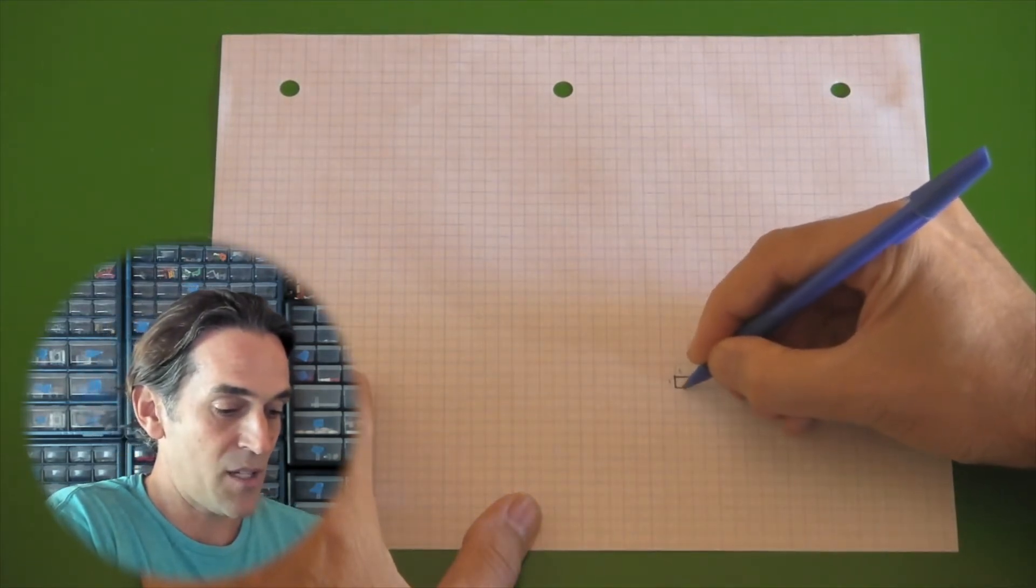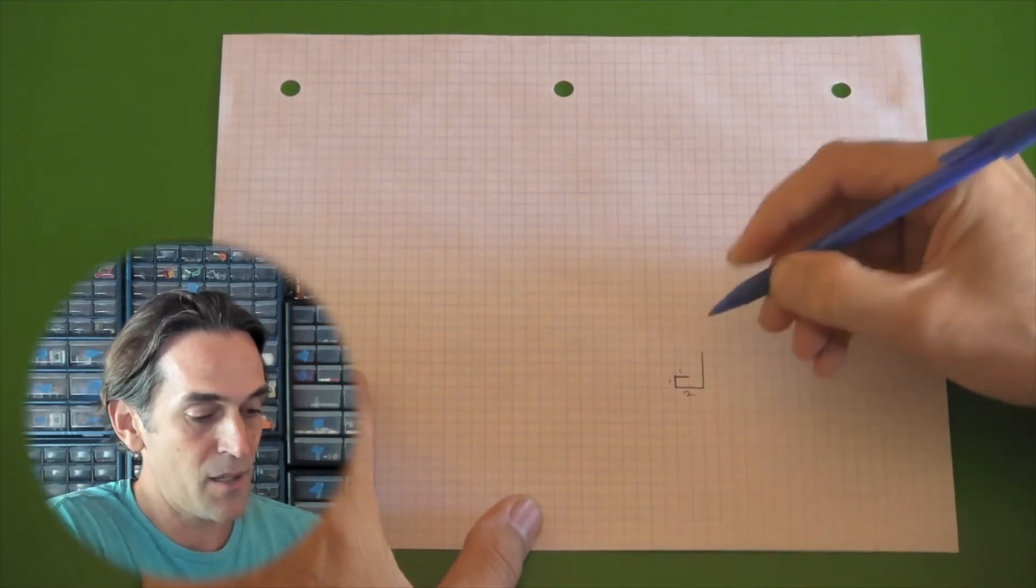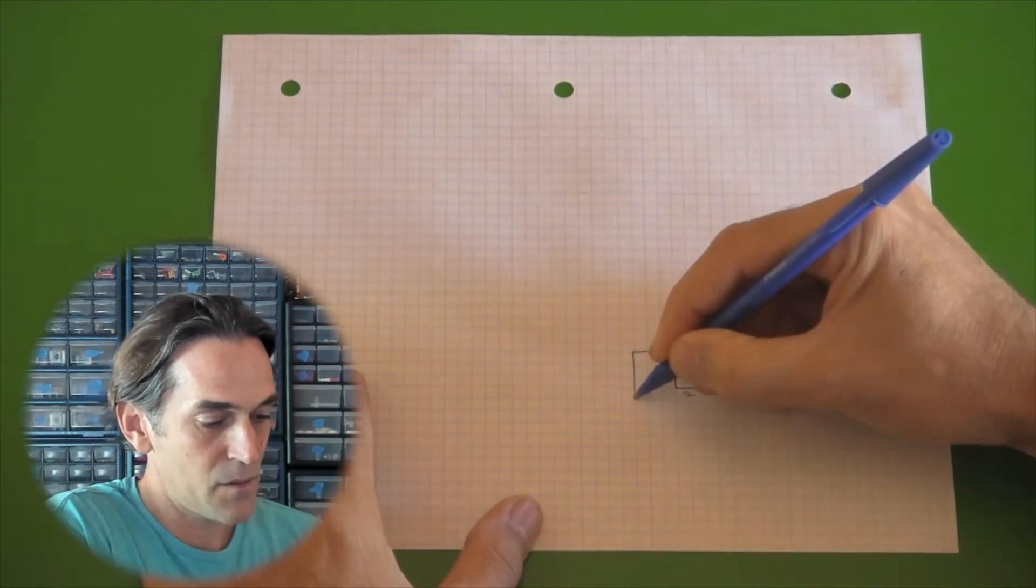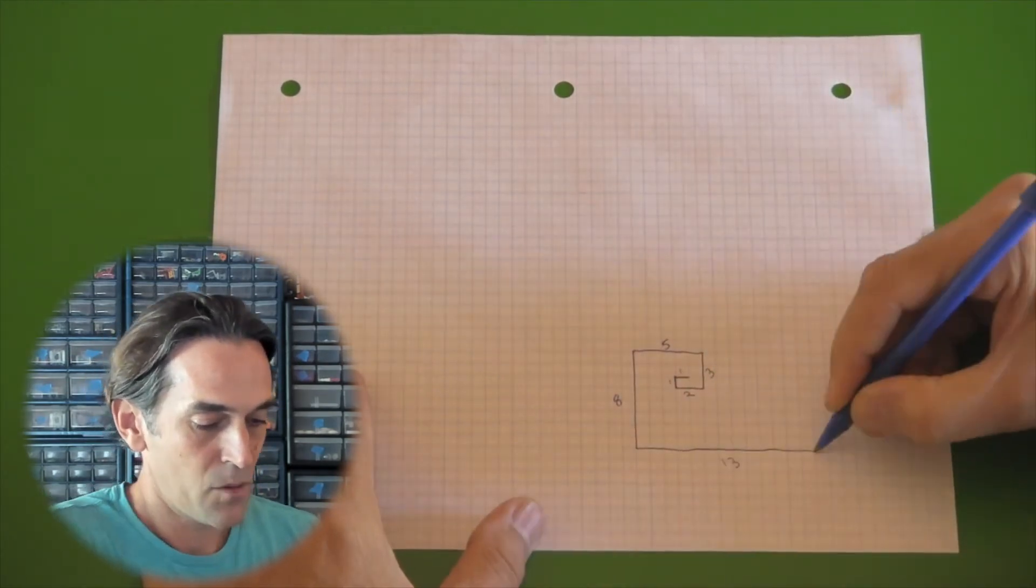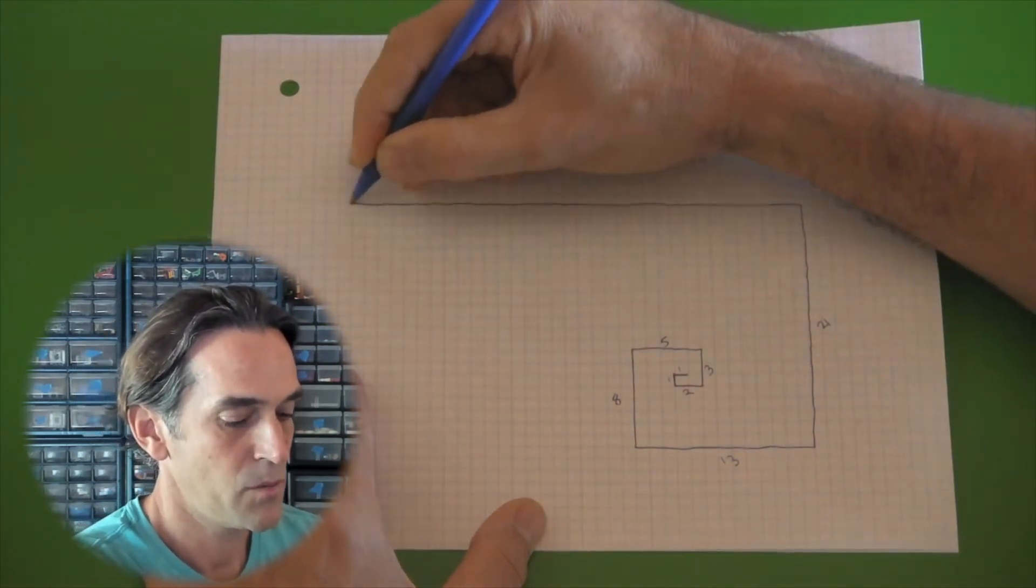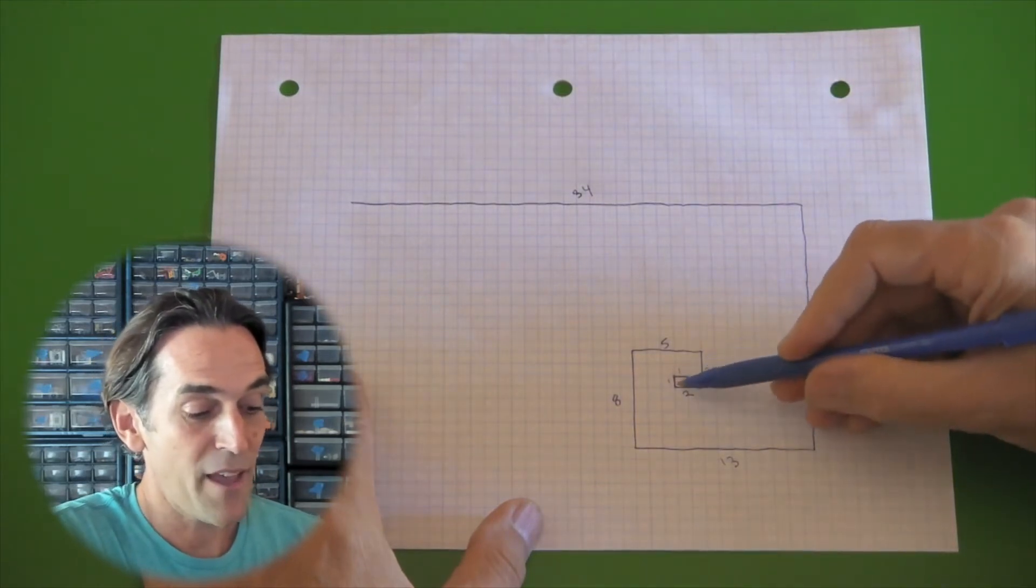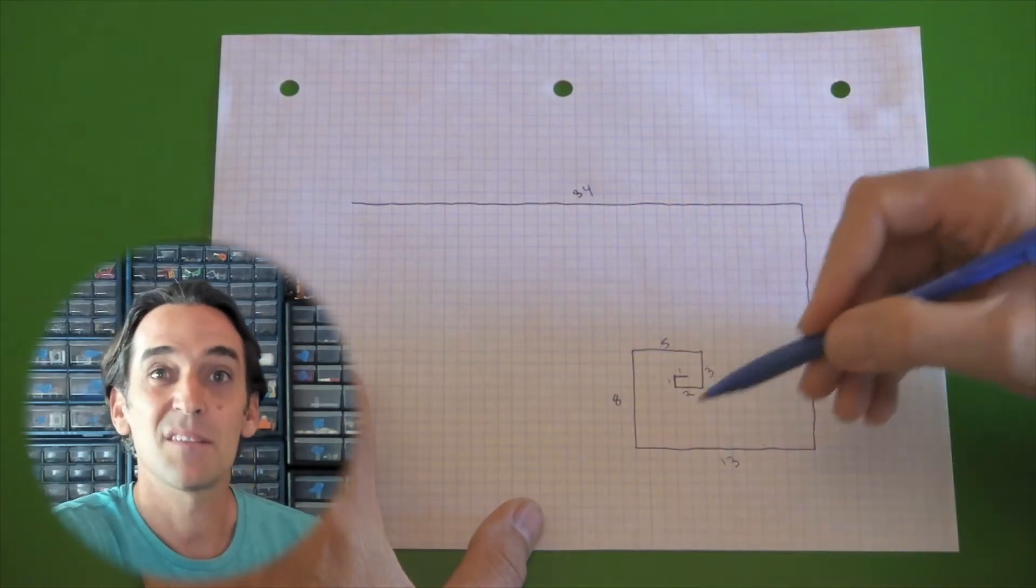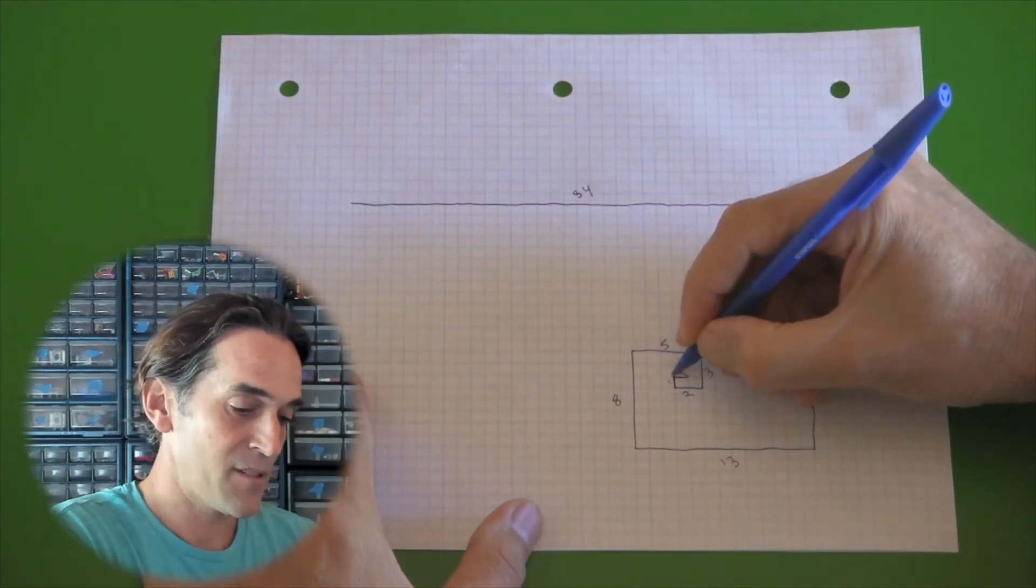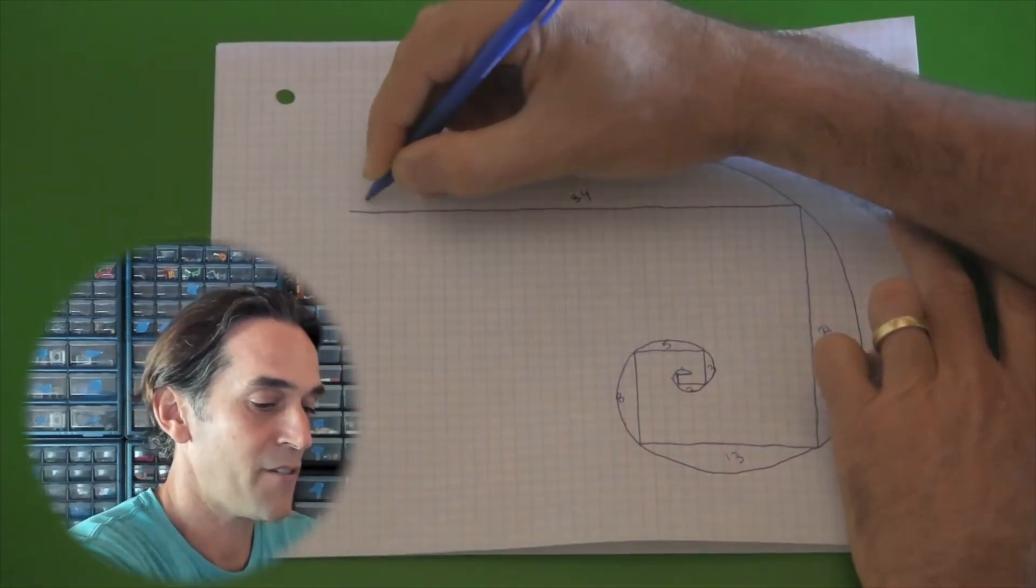One plus one is two. Two plus one is three. And onward. So now you can see I have my spiral with every length that grows being the sum of the previous two lengths. And if I give it a nice little curve like this, here is our Fibonacci spiral.